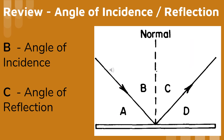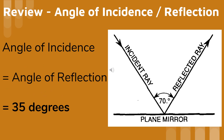Angle B represents the angle of incidence — the angle that the incident ray makes with the normal — and angle C represents the angle of reflection, the angle that the reflected ray makes with the normal. You are given the angle between the reflected ray and the incident ray, and are asked for the angle of incidence and reflection. Since each of these angles are measured with respect to the normal, we find the answer by dividing by two.